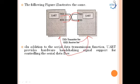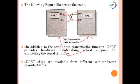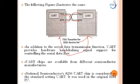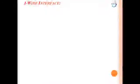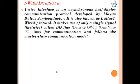In addition to serial data transmission, UART provides hardware handshaking signal support for controlling data flow. UART chips are available from different semiconductor manufacturers; for example, National Semiconductor's 8250 UART chip is considered the standard, having been used in the original IBM PC systems.